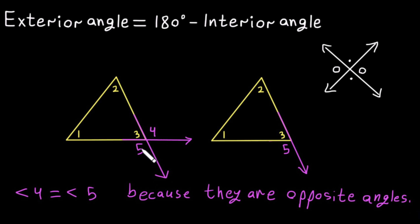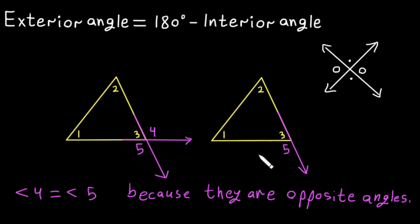They are opposite angles, so they are equal. Remember, we only count one exterior angle at each vertex to get the total sum of exterior angles equal to 360 degrees, whether for a triangle or a polygon. So we have one exterior angle here, one here, and one here, giving us the sum of exterior angles equal to 360 degrees.